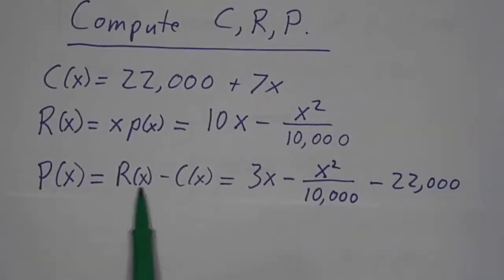And then the profit is the revenue minus the cost, and that's 3X minus X squared over 10,000 minus 22,000. Note that we're using a lowercase p for price, a capital P for profit.